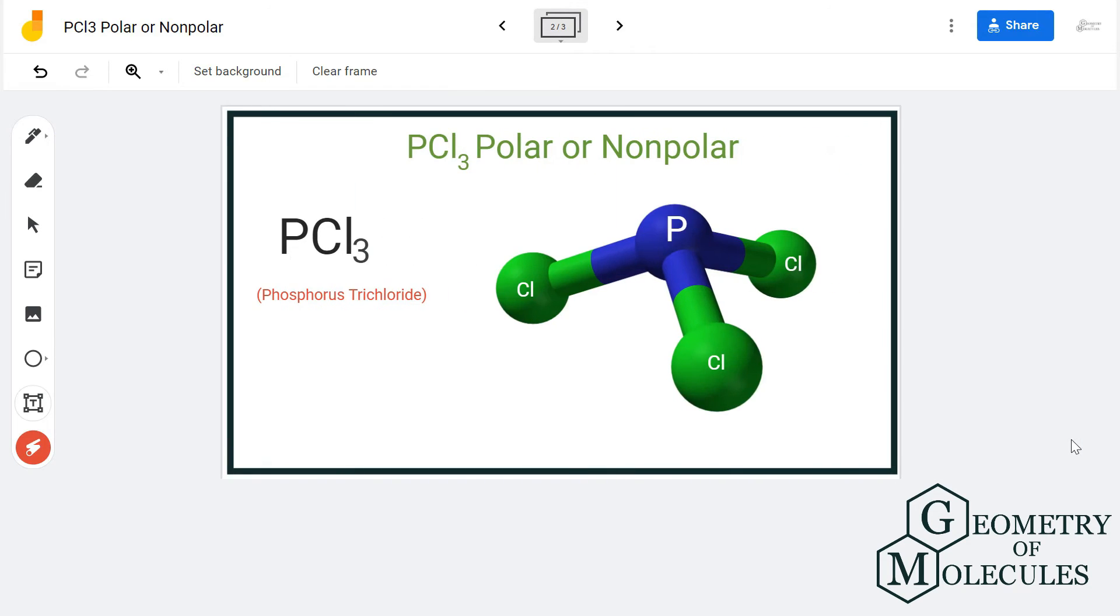also compare the electronegativities of chlorine and phosphorus atoms. The electronegativity of chlorine is much higher than that of phosphorus, and there will be a difference of electronegativity between these two atoms which will be quite higher than 0.5, making these bonds a polar bond and